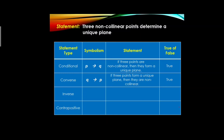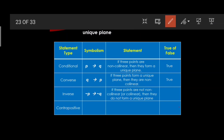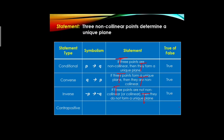For the inverse (∼p → ∼q): 'If three points are collinear, then they do not form a unique plane.' The hypothesis — three points being collinear — is true (it's possible), and the conclusion — that they do not form a unique plane — is also true. Therefore the truth value of the inverse is true.